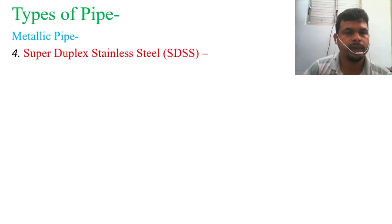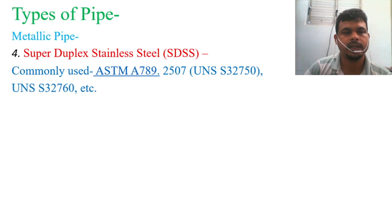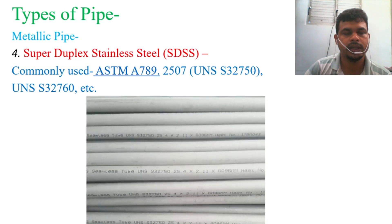Number 4 is the super duplex stainless steel pipe, short form SDSS. Commonly used grades include ASTM A789 2507 UNS S32750 and UNS S32760. In the photos, you can see the writing UNS S32760 for identification.